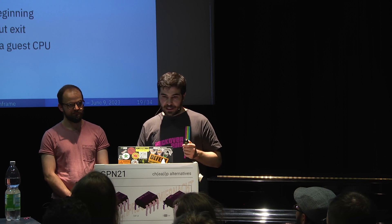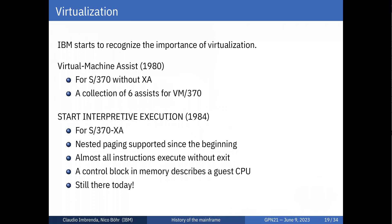Regarding virtualization: IBM started to realize it was important. First in 1980, a small extension to allow VM to run faster. Then in 1984 with the S/370 XA, the Start Interpretive Execution instruction — kind of like the VM start instruction on modern x86 machines, but that was there in 1984 already. Nested paging was supported out of the box from the beginning, most instructions execute inside without even an exit, and there's a control block describing the guest CPU. That's still there today — it's the instruction KVM uses on S390 to run virtual machines.